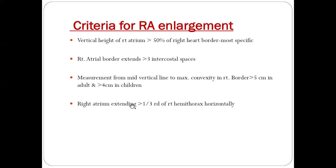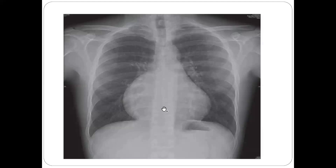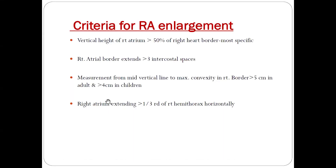Fourth criterion: if the right atrium is extending more than one-third of the right hemithorax. You measure the distance from the spine to the right atrium, and from the spine to the hemithorax. If the right atrium distance is more than one-third of the hemithorax distance, it is also called right atrial enlargement.